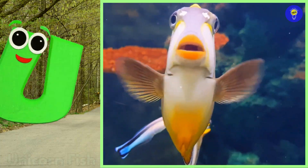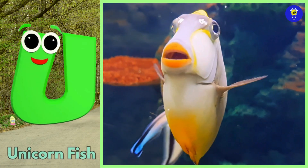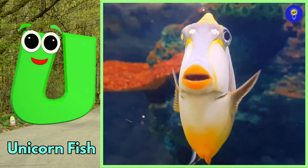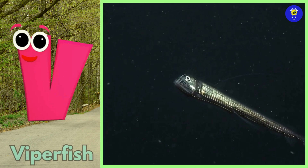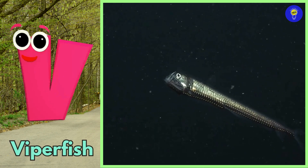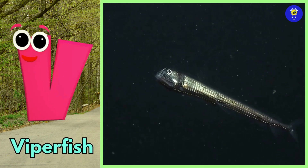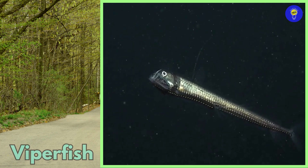U is for unicorn fish. V is for viperfish.